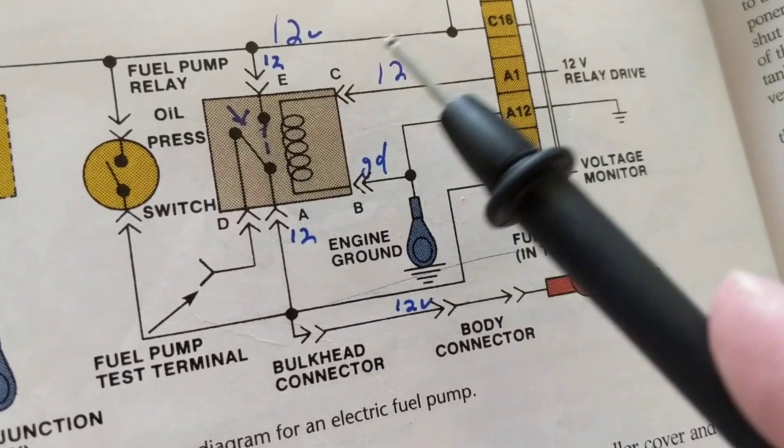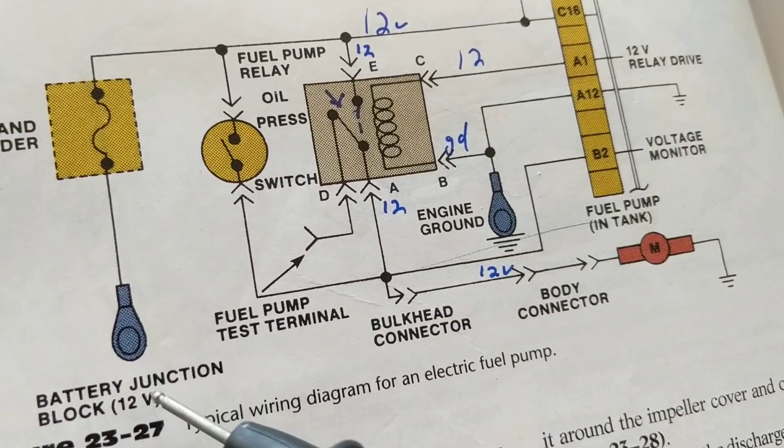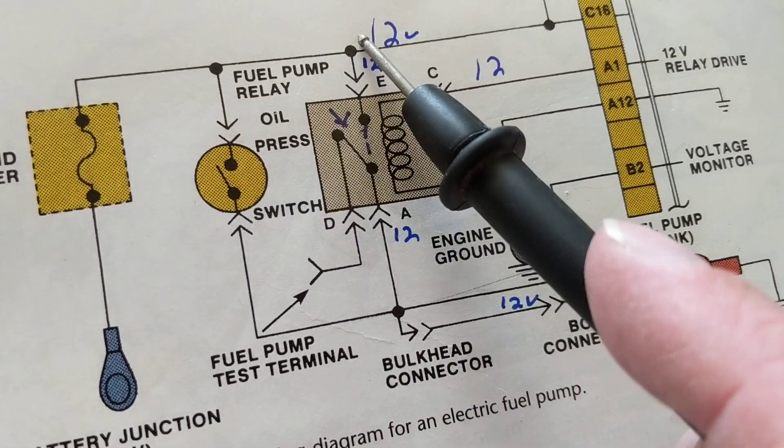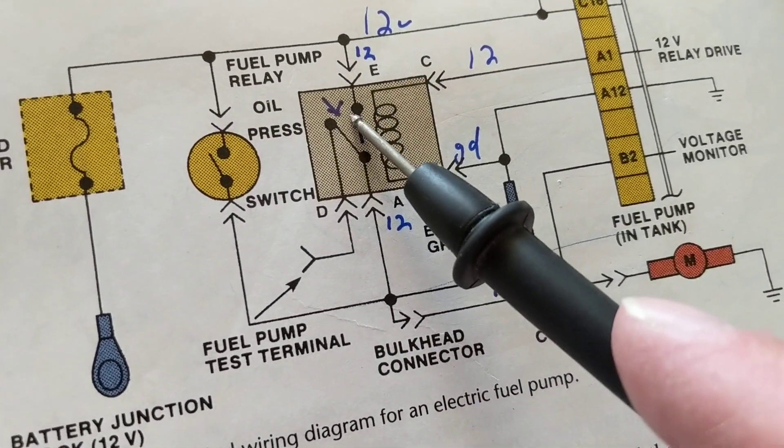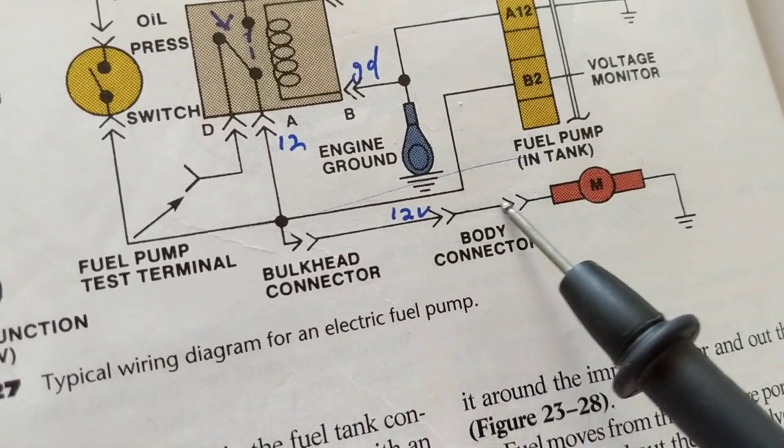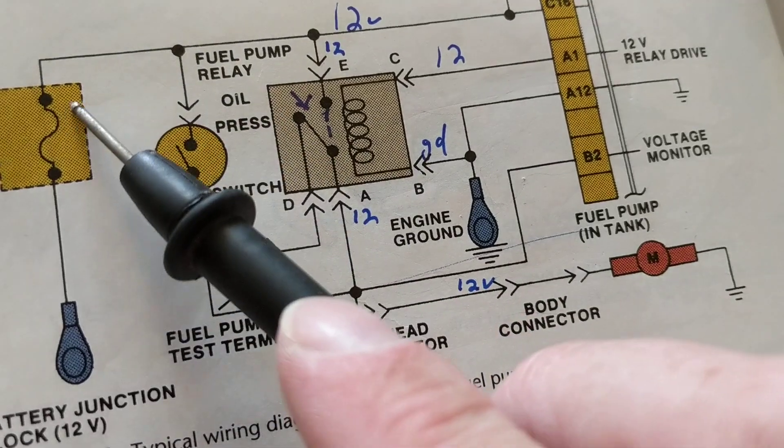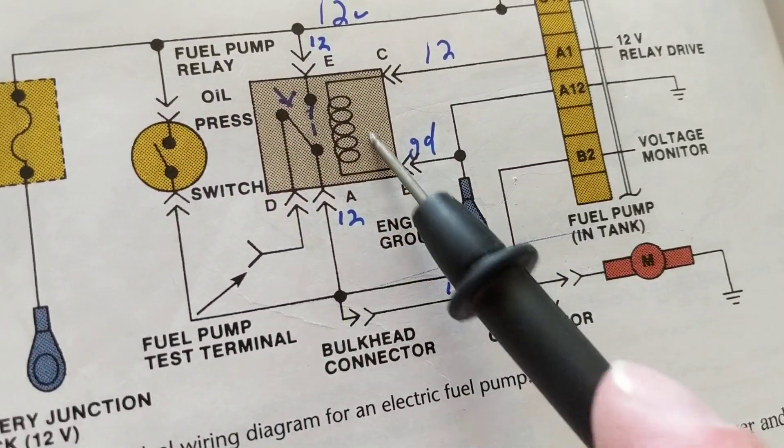This goes from this position to this position. So now follow the dotted lines. Now current can flow. See the junction 12 volts from here, from here, from here. Now this is closed to here to our friend, the fuel pump who needs it. He'll get 12 volts. See the 12 volts?